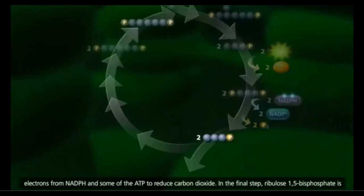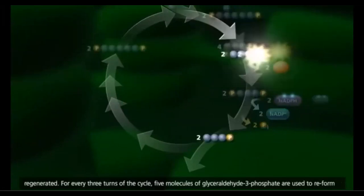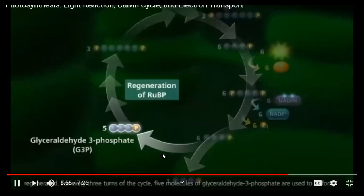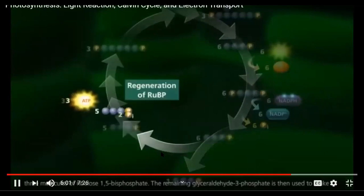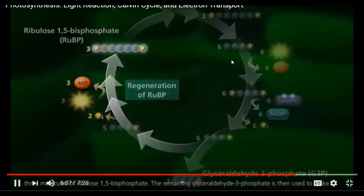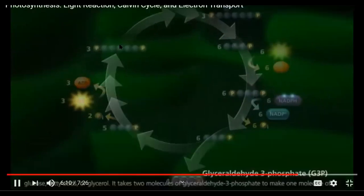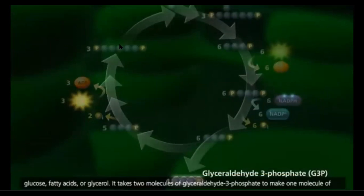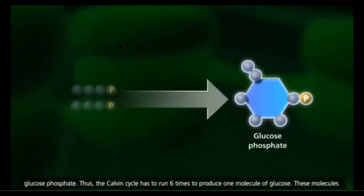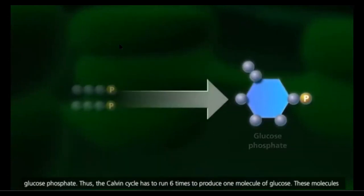In the final step, ribulose 1,5-bisphosphate is regenerated. For every three turns of the cycle, five molecules of glyceraldehyde 3-phosphate are used to reform three molecules of ribulose 1,5-bisphosphate. The remaining glyceraldehyde 3-phosphate is then used to make glucose, fatty acids, or glycerol. It takes two molecules of glyceraldehyde 3-phosphate to make one molecule of glucose phosphate; thus, the Calvin cycle has to run six times to produce one molecule of glucose.